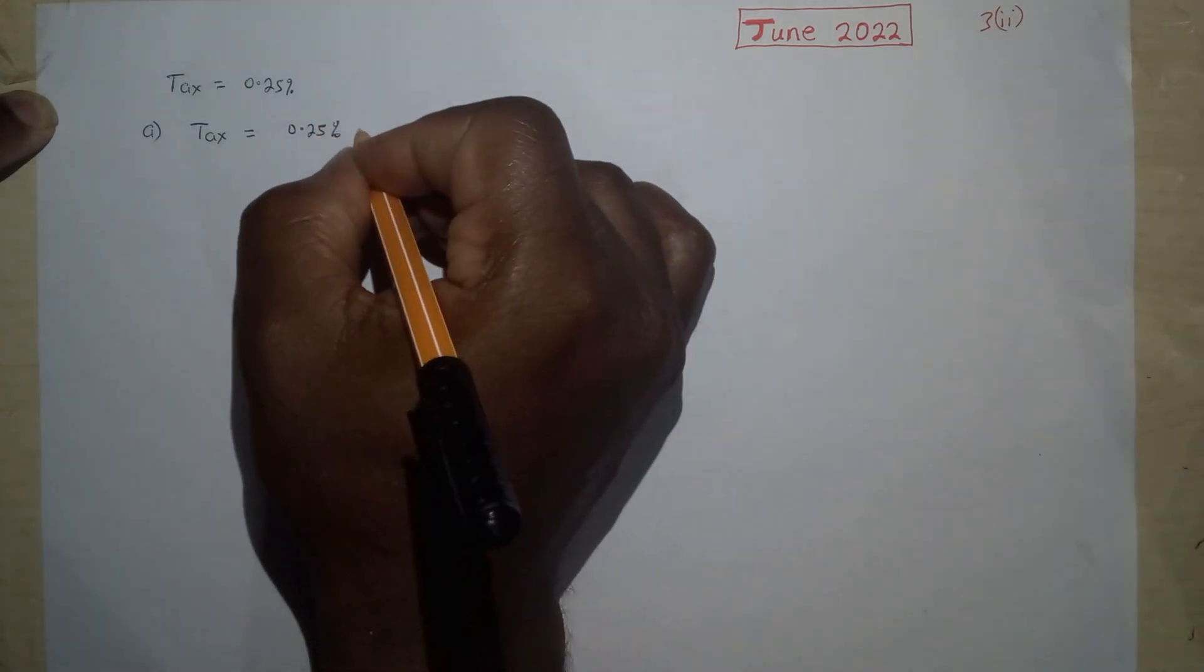Part a: We have to determine the amount of tax that was paid on phones worth 4.8 million. In this case, the tax will be equal to 0.25% of 4.8 million. Our calculation should give us a value of 12,000 FCFA.